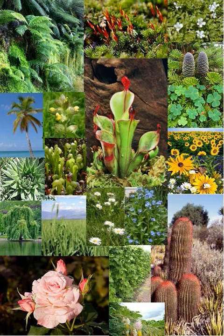Ferns are a large and diverse group, with some 12,000 species. A stereotypical fern has broad, much-divided leaves, which grow by unrolling.